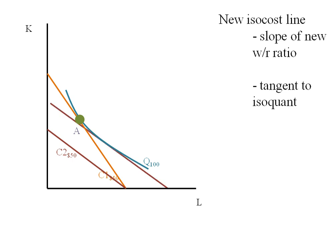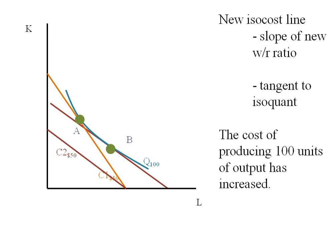So I increase my line and I find its tangency at point B. I'm still producing 100 units of output, but I'm doing so at the original price of labor and the new price of capital. Now since this line is higher, the cost of producing 100 units of output has increased. Let's suppose that it's $60 million, and that's what I've labeled it right here.